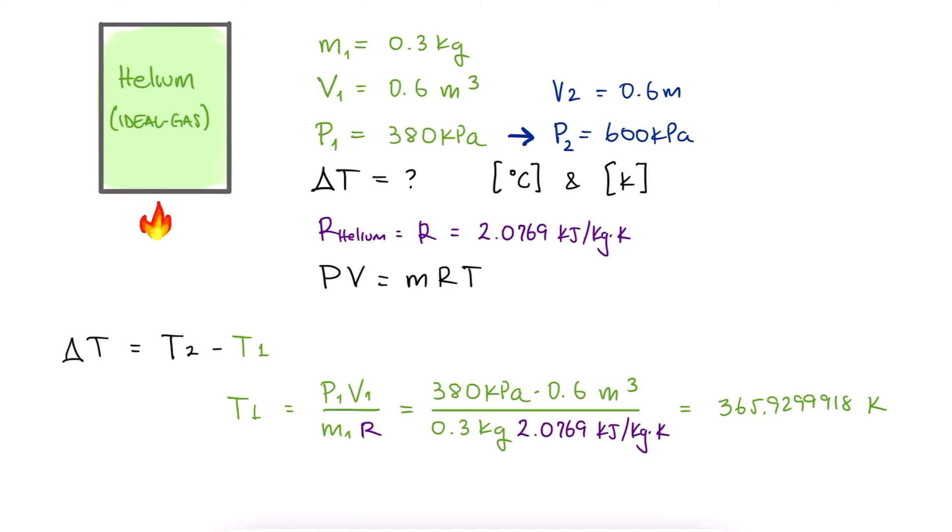Since the volume is not changing from state 1 to state 2, we can say that RT1 over P1 is equal to RT2 over P2, or just that T2 is equal to T1 times P2 over P1. We substitute the given values to find that T2 is 578 Kelvin.